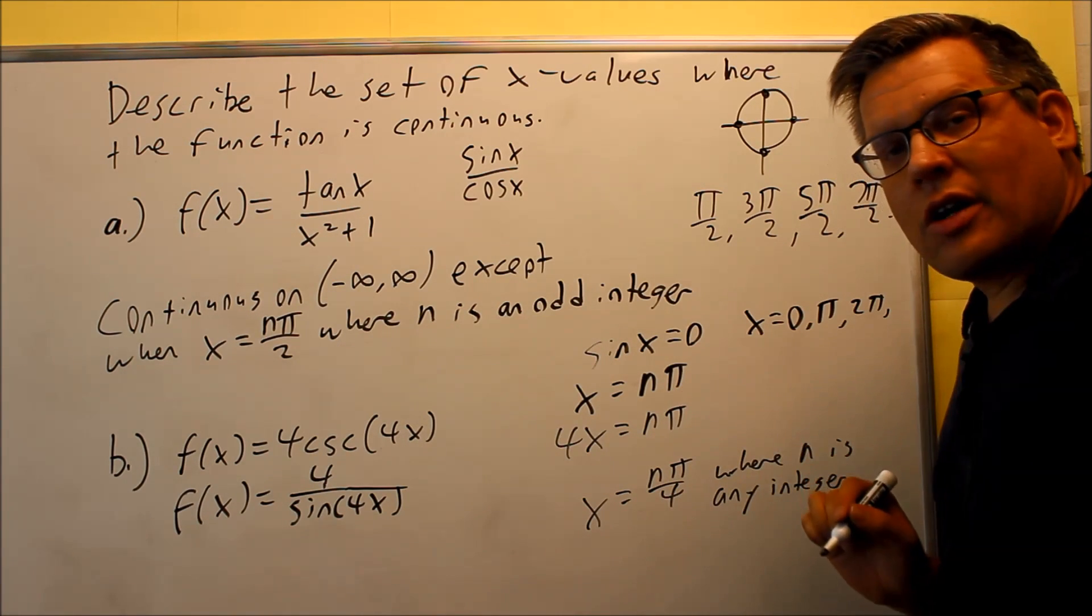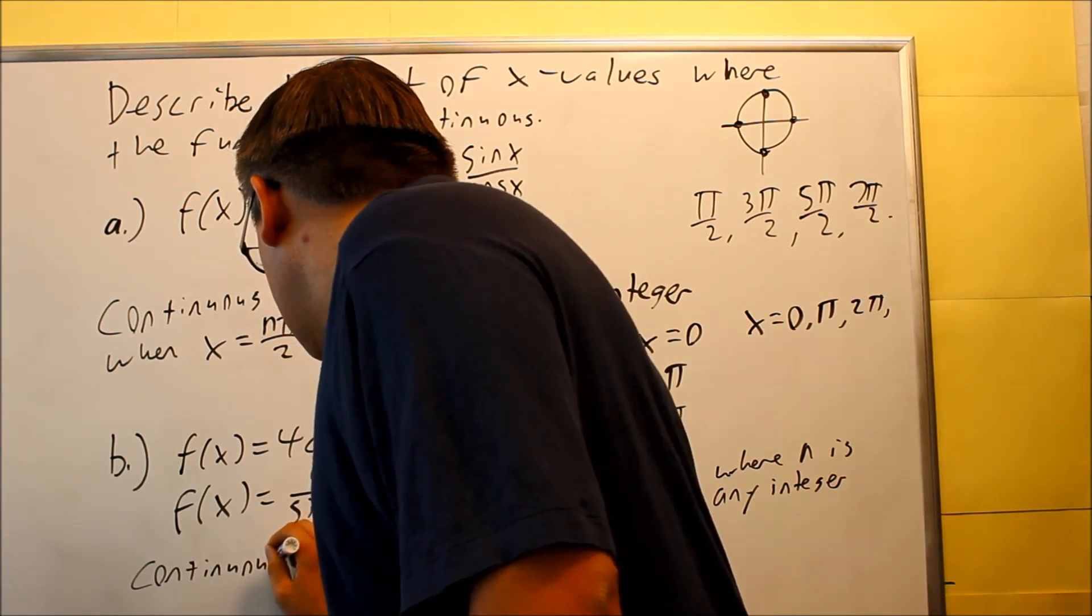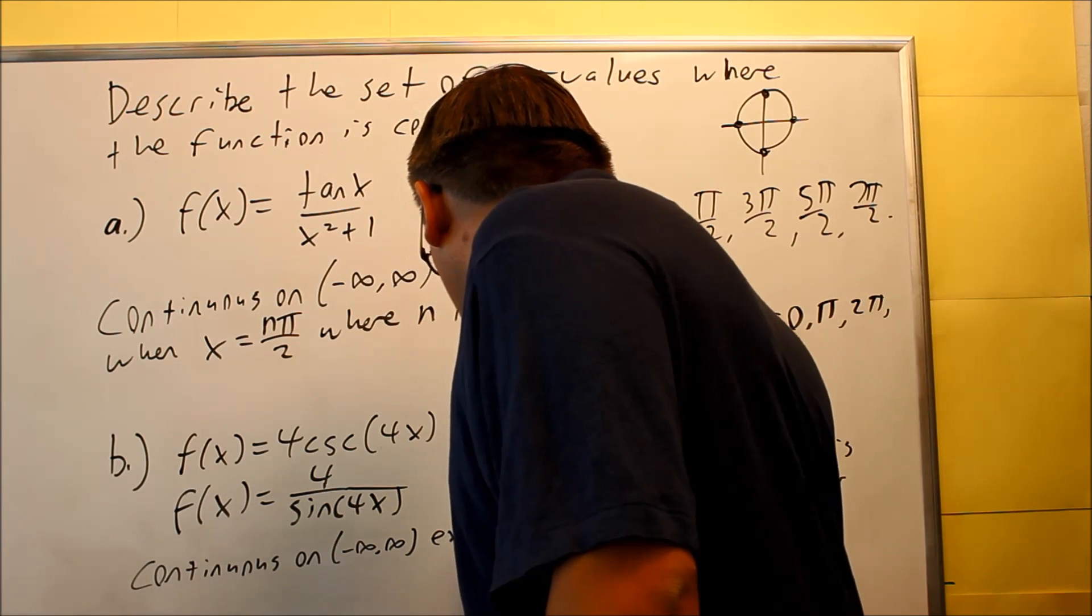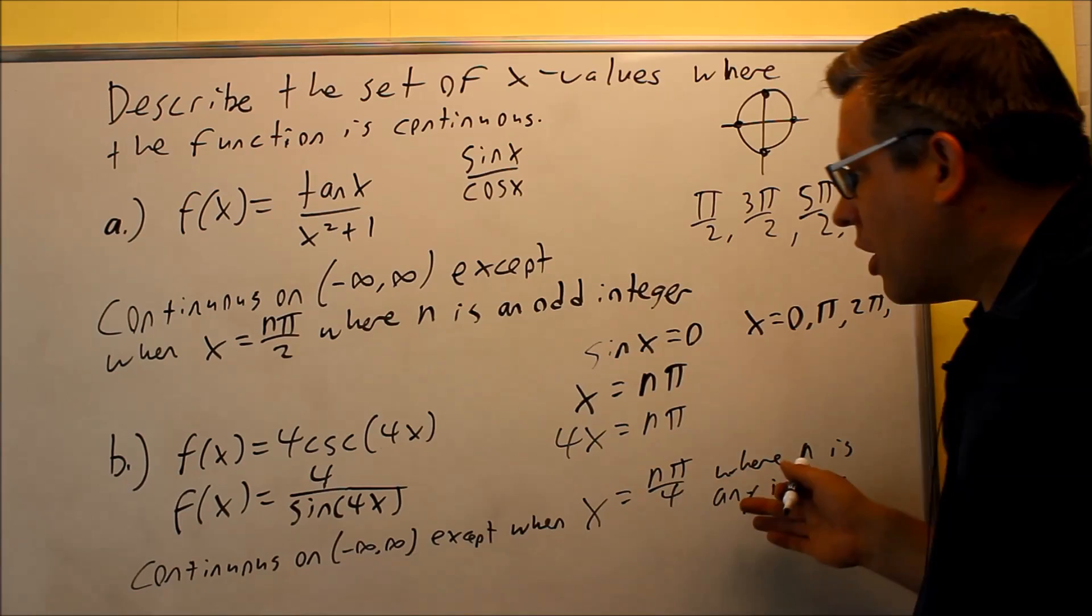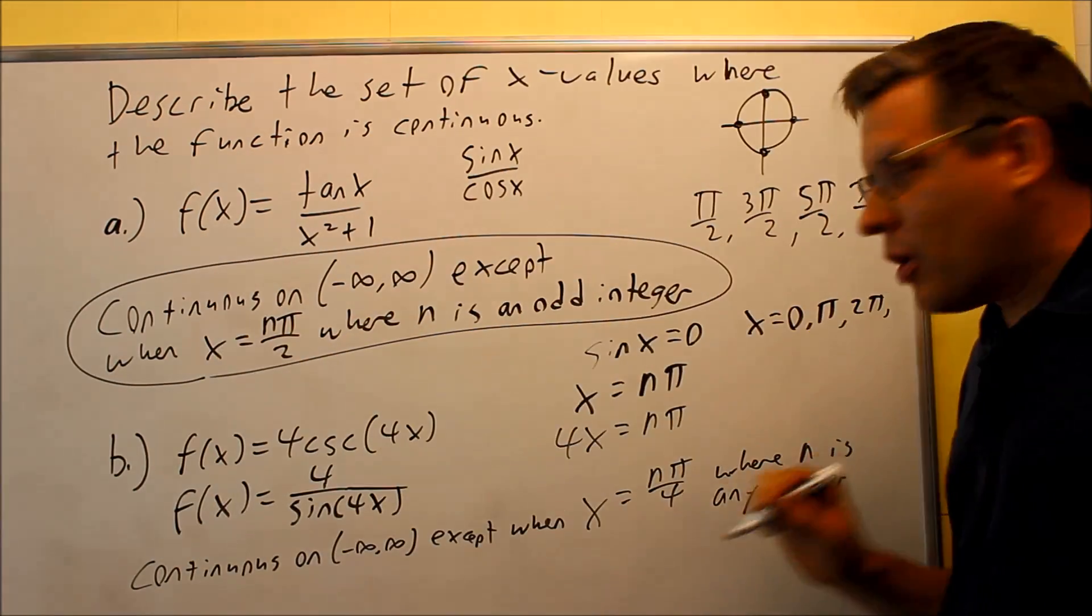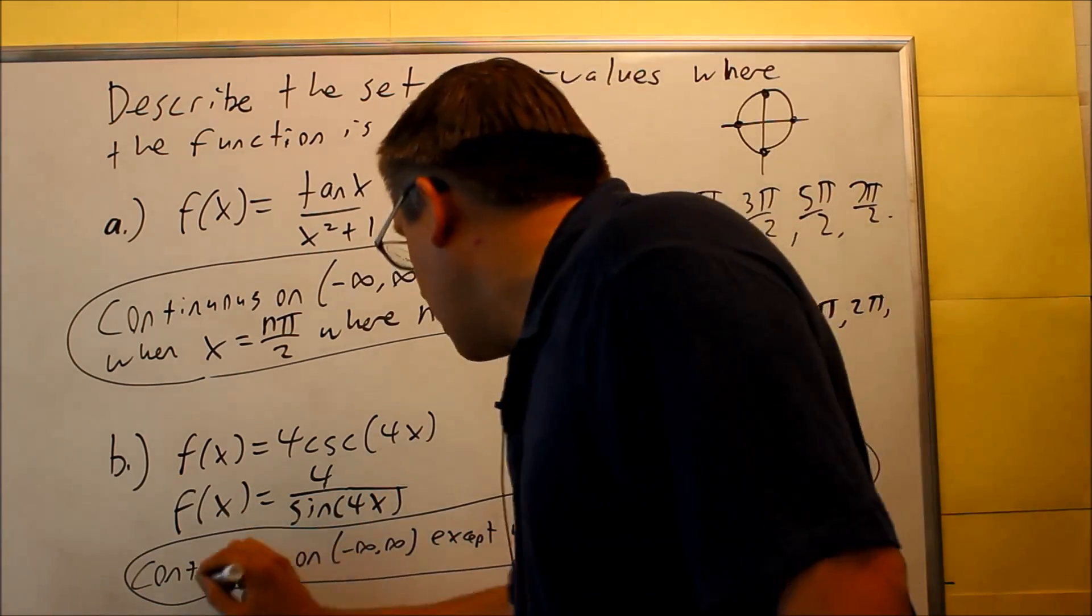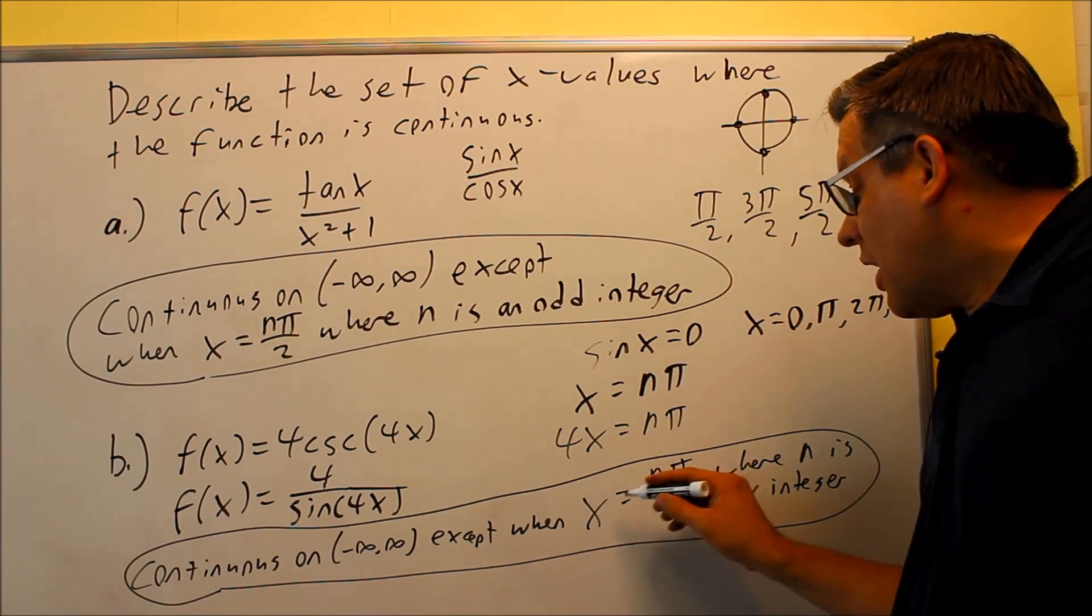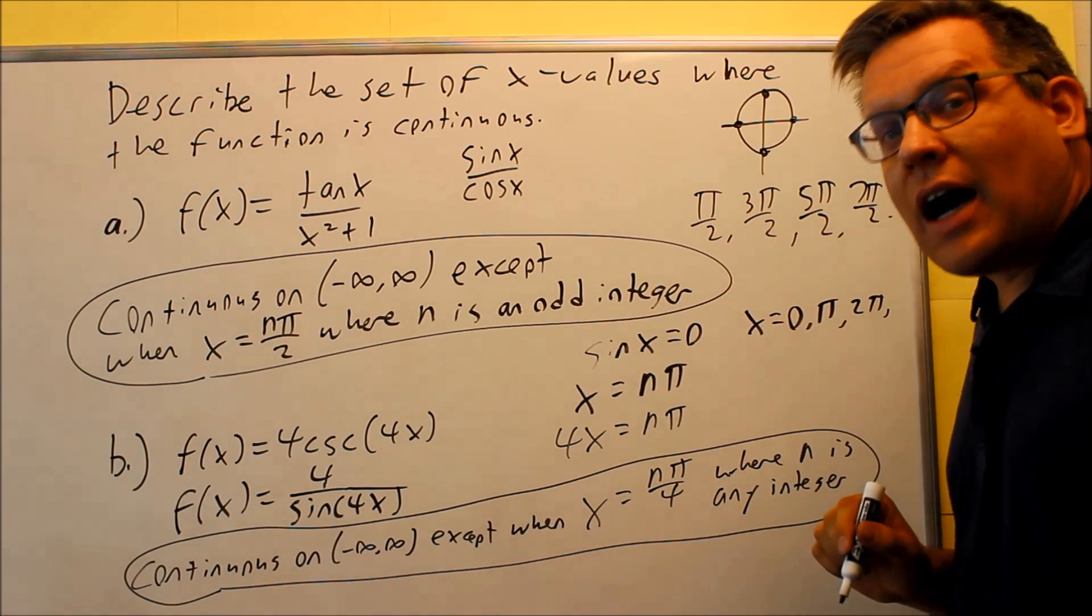So that's the place where it's not going to be continuous. So here's the statement you would write. You would say continuous on negative infinity to positive infinity, except when x equals n pi over four, where n is any integer. This is the whole statement that you would write. So the ones I'm circling here will be your answers. So there's the one that we had for part A. This whole thing is what you would put for your answer. It's continuous, negative infinity to positive infinity, except when you're at this place, x is equal to n pi over four, and again, n is going to be any integer. This one specifically is odd integer.